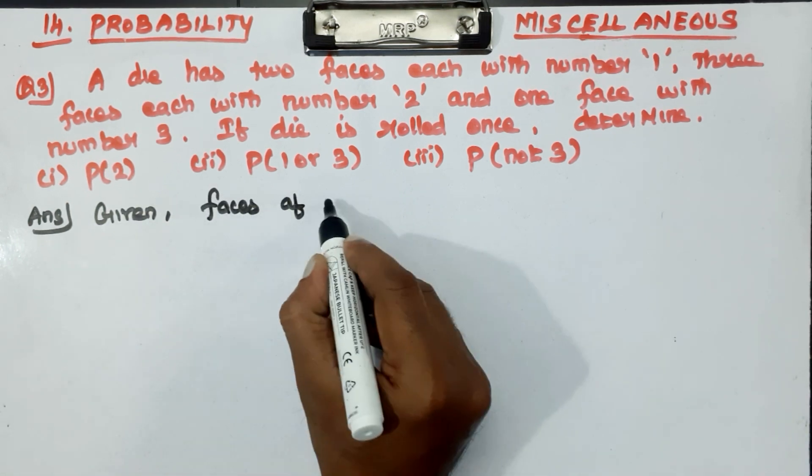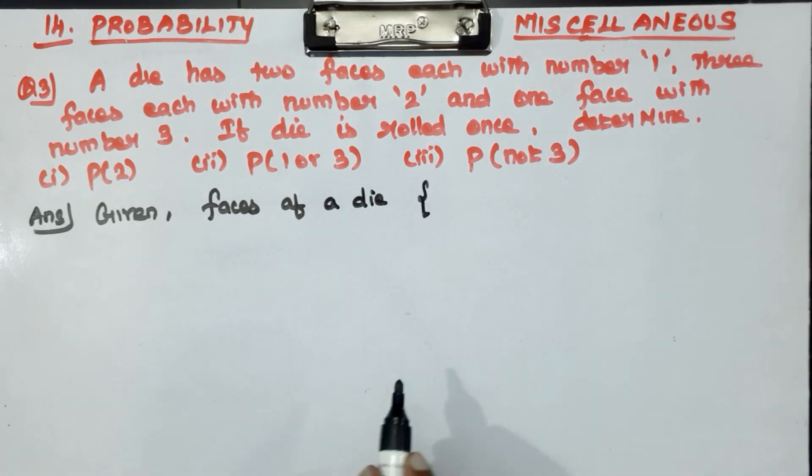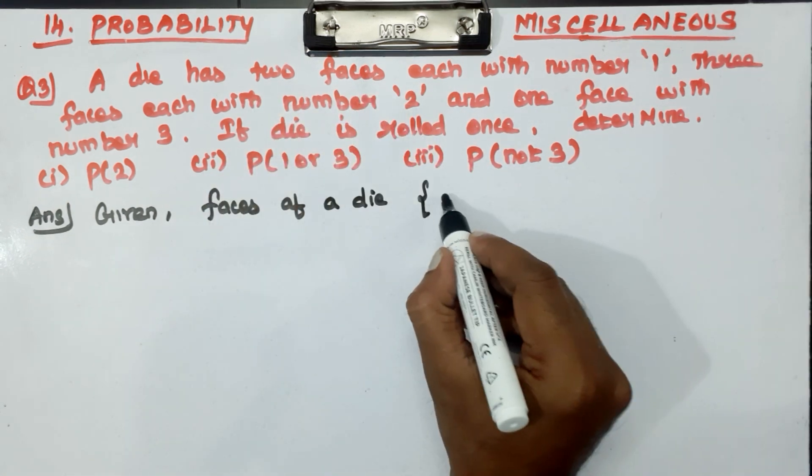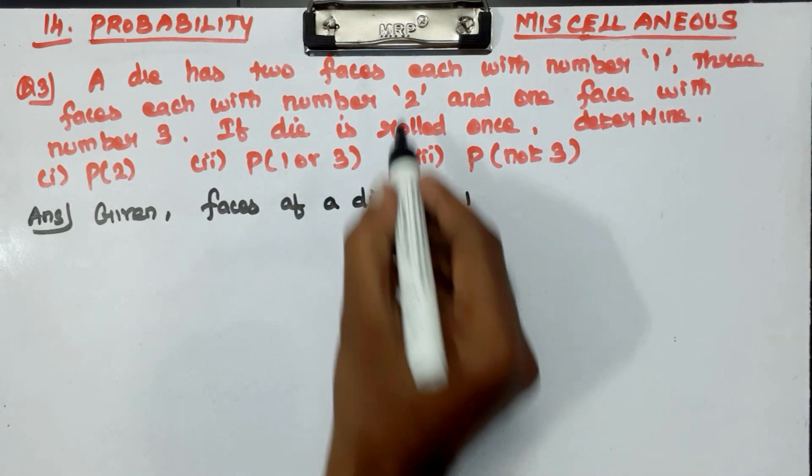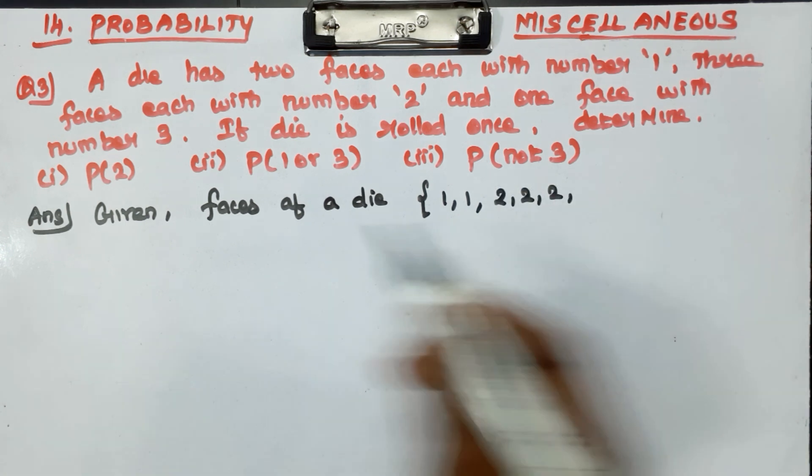Given faces of the die, how many faces? 1 and how many faces? 2 faces with 1, and 3 faces with 2, and 1 face with 3.